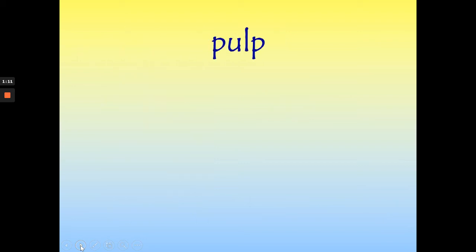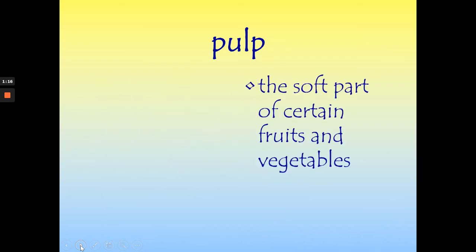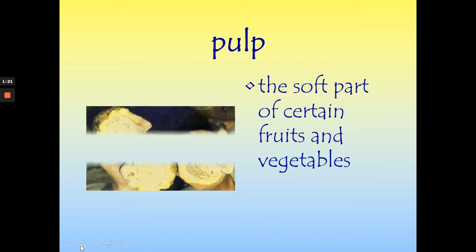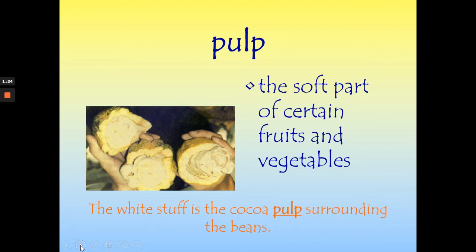The next word we're going to see in our story this week is the word pulp. Pulp is the soft part of certain fruits and vegetables. Here is a picture of the inside of the cocoa bean — the pulp inside. The white stuff is the cocoa pulp surrounding the beans. We also talk about the pulp of an apple as the part that you eat. So pulp is the inside soft part of fruits and vegetables.